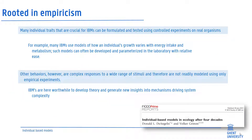IBMs are close to the daily life of biologists, who are not mathematicians. Many individual traits crucial for IBMs can be formulated and tested using controlled experiments on real organisms. For example, many IBMs use models of how individual growth rate varies with energy intake and metabolism — such models can often be developed and parameterized in the laboratory with relative ease. Other behaviors, however, are complex responses to a wide range of stimuli and are not readily modeled using only empirical experiments. Individual-based models are nevertheless worthwhile to develop theory and generate new insights into specific mechanisms driving system complexity.